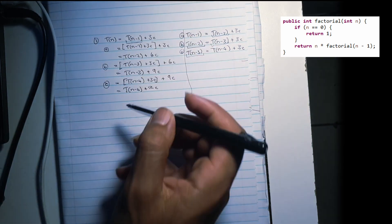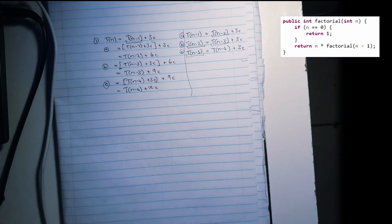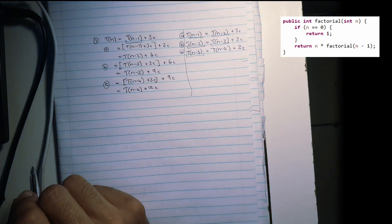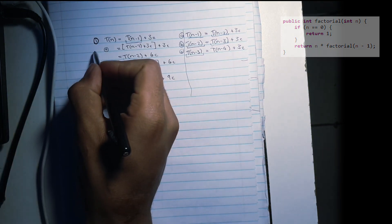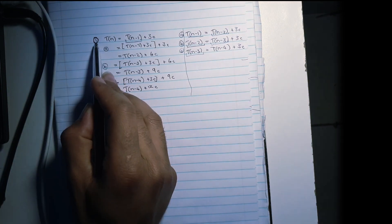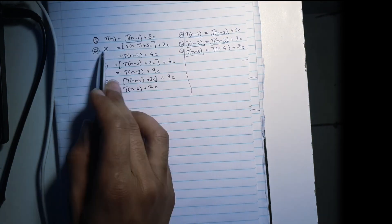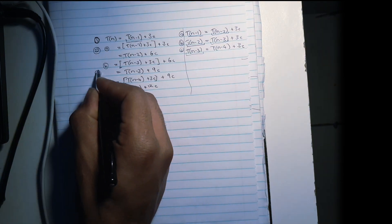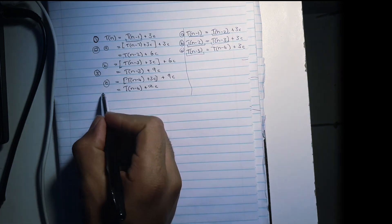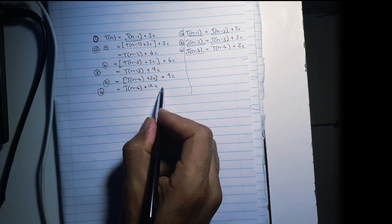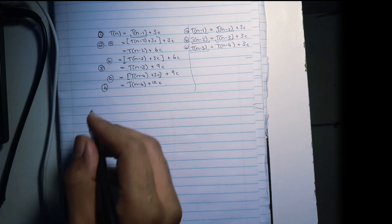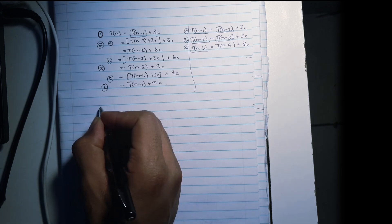The next step is we want to find a pattern — what was happening while we were substituting? We can generalize: initially we had our first expression, after substituting A we have the second, after substituting B we have the third, and after substituting C we have another expression. Now we ask ourselves: for the value of K, what does our T(N) expression look like? We have T of N minus K plus K times 3C.